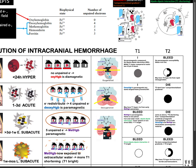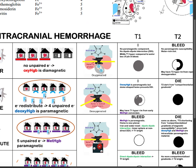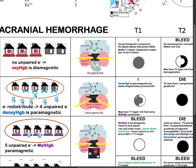In the acute stage, you can also have a hyperintense T1 rim from early methemoglobin conversion.